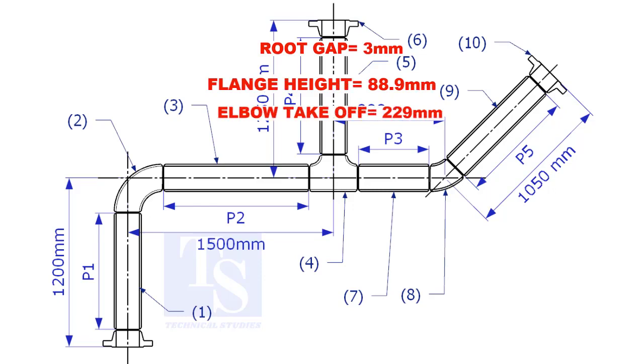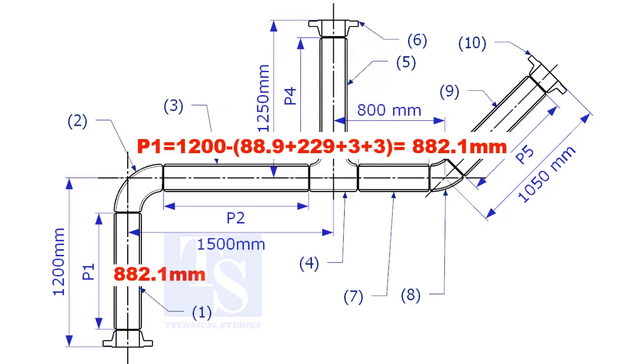Substitute the sum of the height of the flange, elbow takeoff, and 2 root gaps from the total length of 1500. Length of pipe P1 is 882.1 millimeters.